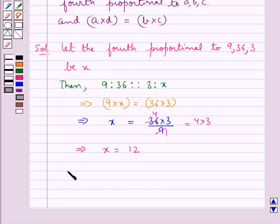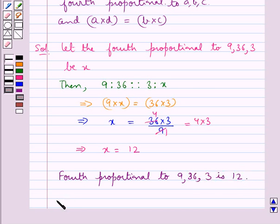That is, the fourth proportional to the numbers 9, 36 and 3 is 12. So, this completes the session. Hope you have understood the solution for this question. Thank you.